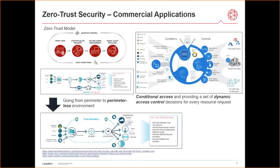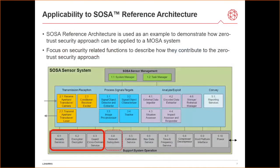This slide shows some of the zero-trust applications in the commercial world. For example, Cisco is thinking about how going from a trusted perimeter network environment to a zero-trust perimeter-less environment will impact the trust boundary, as well as the features required to secure it. Similarly, Microsoft is looking at employing conditional access and dynamic access control for managing resource requests for cloud services.